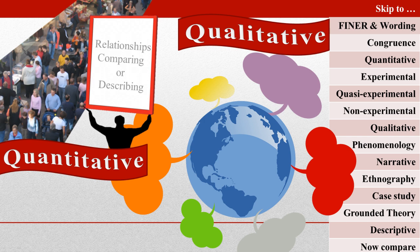Quantitative research questions may be about relationships among variables, comparing groups, or describing reality. Qualitative research questions are about experiences and people's ways of organizing, relating to, and interacting with their contexts.